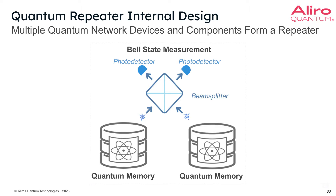Let's take a look under the hood within a quantum repeater. This is a simplified view of a quantum repeater, but it gives you a sense of what the design looks like. As you can see, there are multiple components here. I'll emphasize that there are multiple devices and components within a quantum repeater that make up the repeater itself. It's not a single monolithic device today, although in the future we expect to see that. Today they are individual discrete components that are brought together to form this quantum repeater.